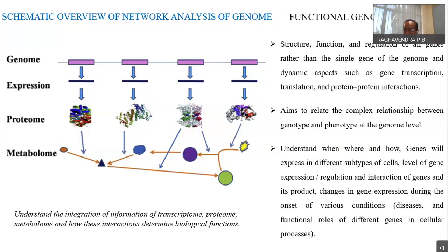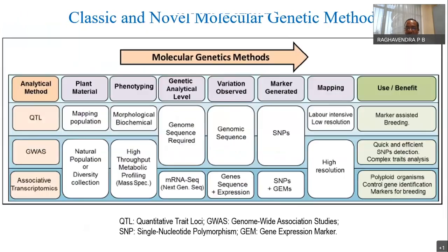Functional genomics aims to look at the complex relation between genotype and phenotype — understanding where genes express, when they express, and how they express. This is key because when there is a mutation, the machinery starts to act based on the mutation — either impaired or activated. People talk about knockout, but knock-in can also occur because of DNA repair mechanisms. Different gene expression at subtypes, cell levels, and expression regulation make the key things to look at the onset of different conditions and disease models.